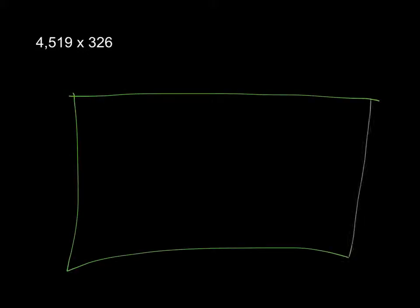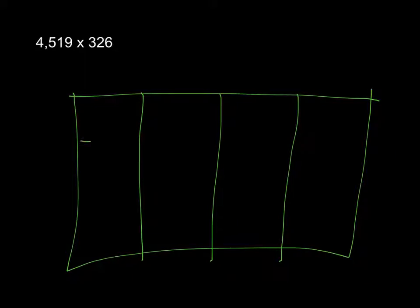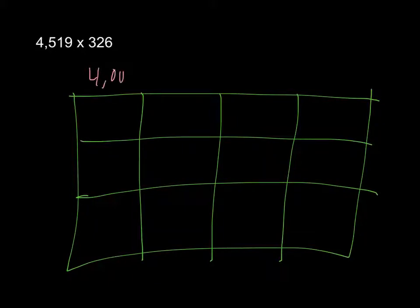Really, the only difference is that you're adding a column in your area model. So you still start with a rectangle, but now you're separating it into four sections instead of three, vertically. And then you'll have three horizontal, and we will have 4,000, 500, 10, and 9 across the top.